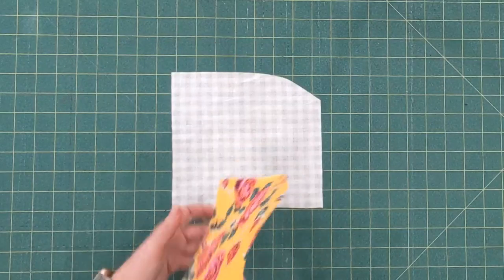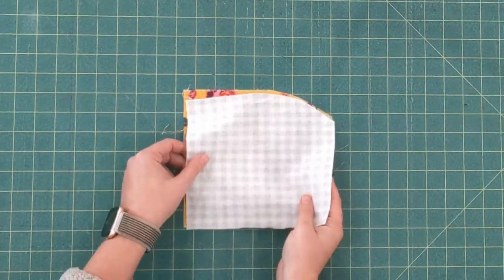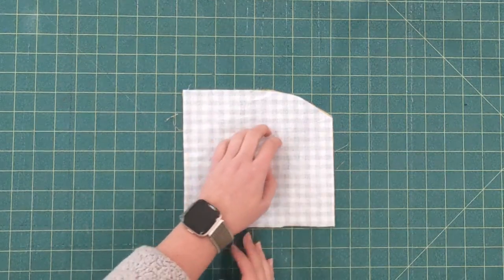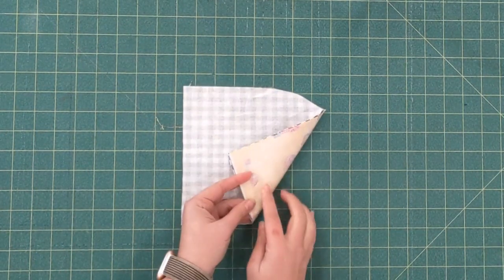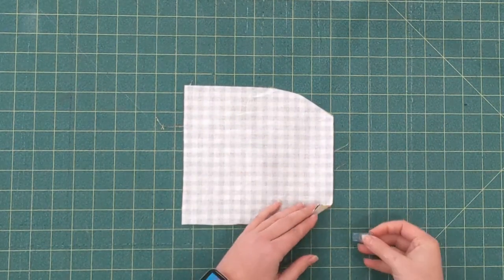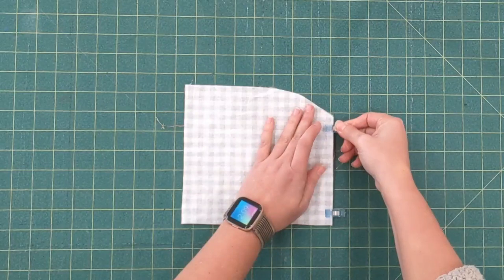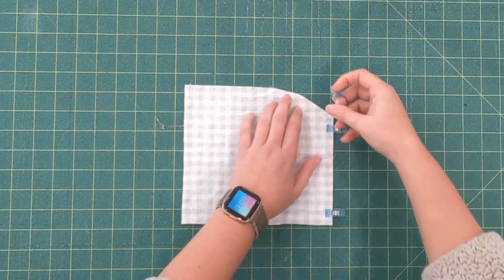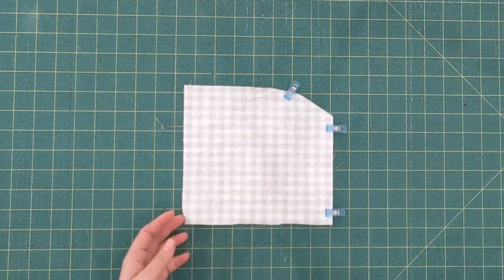So now what we're going to do is we're going to put your pieces right sides together. The interfacing should be on the outside and we're going to stitch these together around all the sides but the bottom.